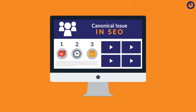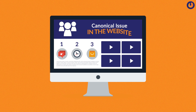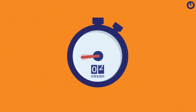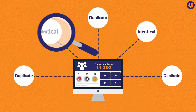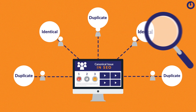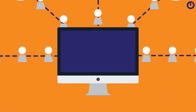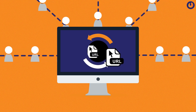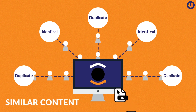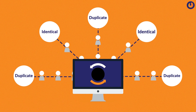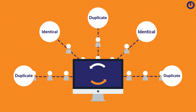What is a canonical issue in SEO and how to fix it? Does your website face canonicalization issues? Do you fear your website's search rankings getting impacted because of indexing problems caused by duplicate or identical content on more than one URL? Simply speaking, the canonical issue in SEO arises when a website has multiple URLs that land the audience on similar content, making it complicated for search engines to index the actual URL.